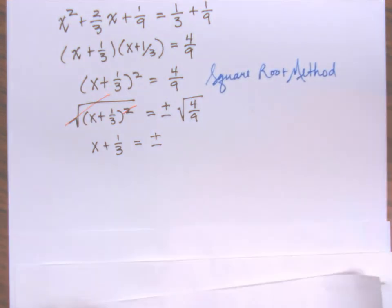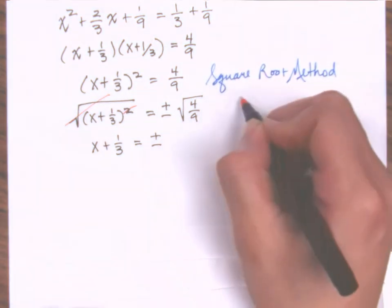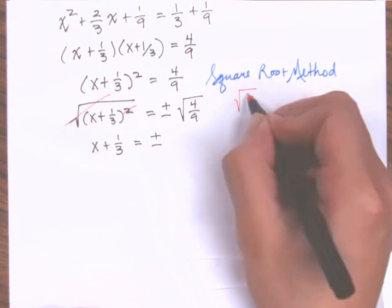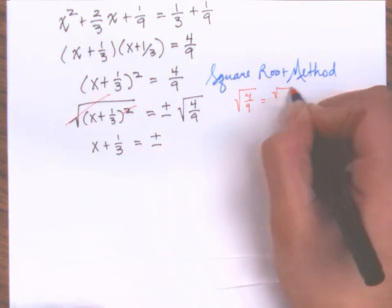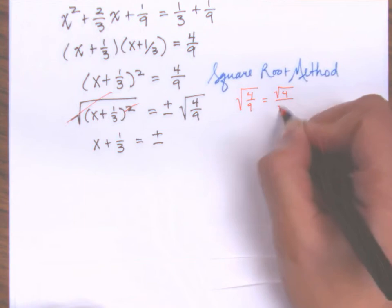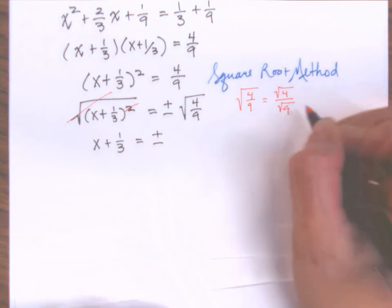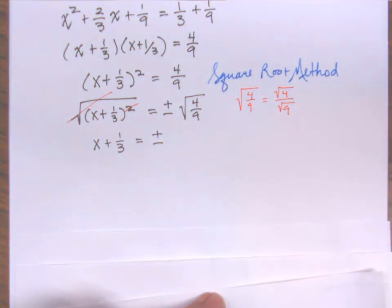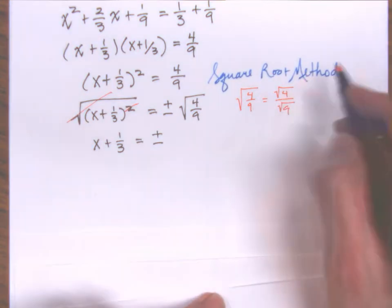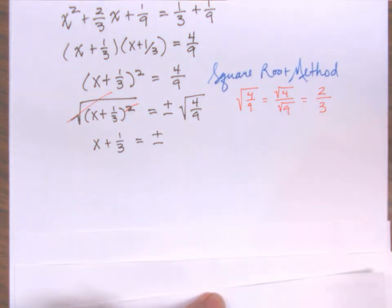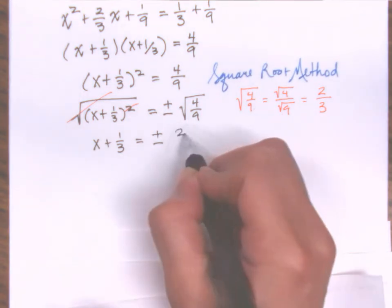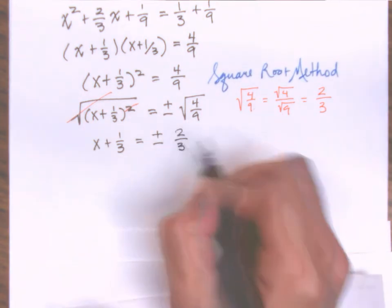Working off to the side: the square root of four-ninths — I can break that square root to the numerator and denominator and take the square root separately. The square root of four is two, the square root of nine is three. So here I'm looking at plus or minus two-thirds.